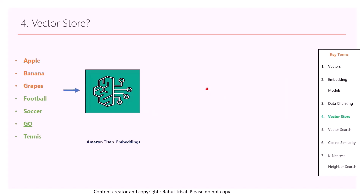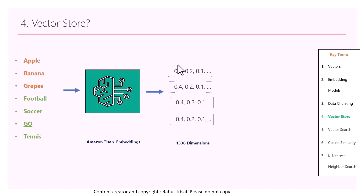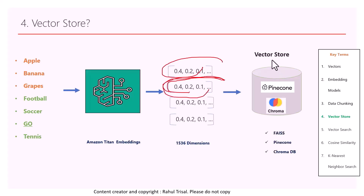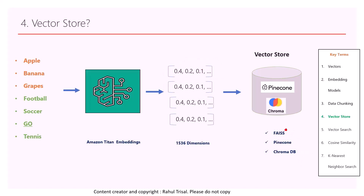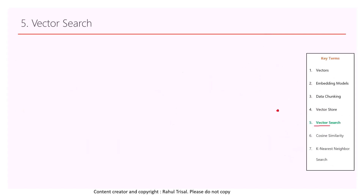Next, we need to understand vector stores. We've established that words passed through the Amazon Titan embedding model get converted into vectors of 1536 dimensions. The question is: where do we store these vectors? In a real-world application you can have thousands or millions of them. You store them in a vector store or vector database. There are many options: Facebook AI Similarity Search (FAISS), Pinecone, and Chroma DB. FAISS is a library provided by Facebook, while Pinecone and Chroma DB are more conventional vector store databases that persist all the vectors you create through embeddings.